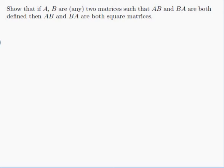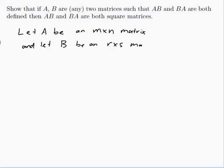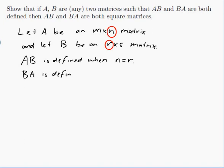So let's write down what the sizes of A and B are. Let A be an m by n matrix and let B be an r by s matrix. Now, AB is defined when the middle numbers match. So those middle numbers would be n and r, because I do m by n times r by s. So when n equals r.